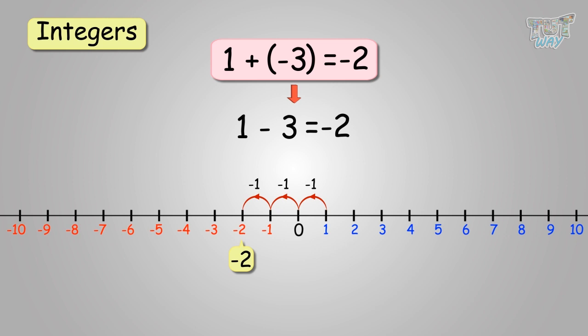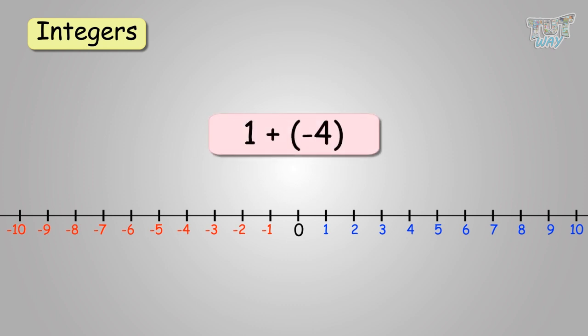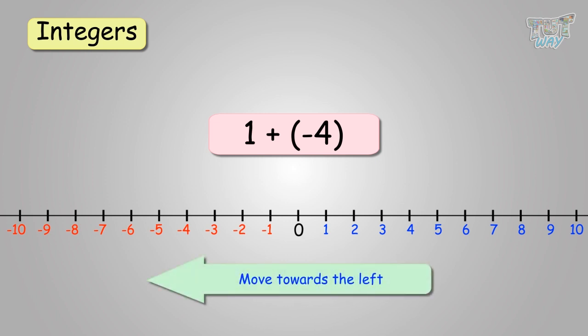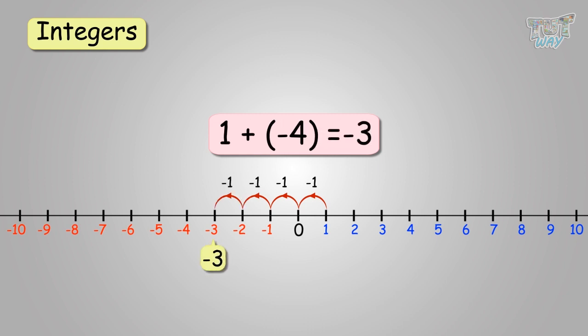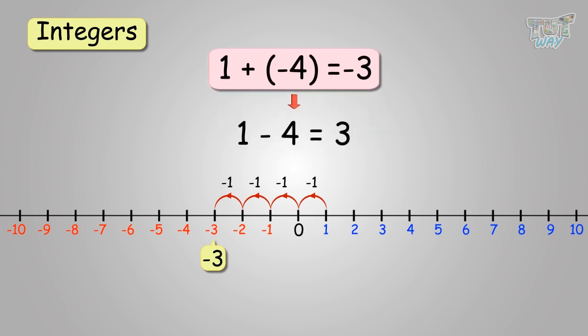Now, let's set up another question. We have to add 1 and negative 4. You'll be moving towards the left of 1, as we have learned to add a negative number. Start at 1, and then move 4 places to the left: 1 to 0, 0 to negative 1, negative 1 to negative 2, and then negative 2 to negative 3. So, 1 plus negative 4 equals negative 3. Adding a negative number is the same as subtracting a positive integer. So, we can write this as 1 minus 4 equals negative 3.